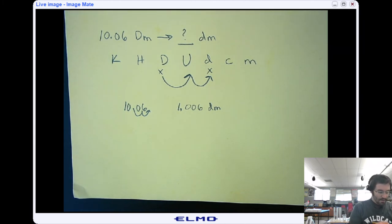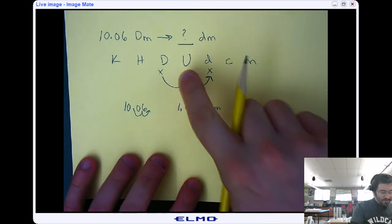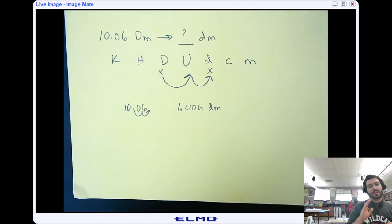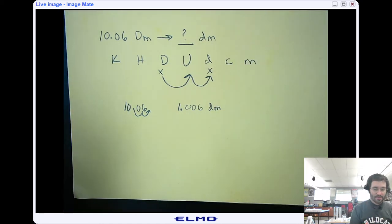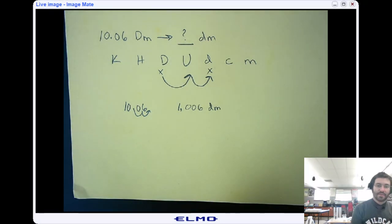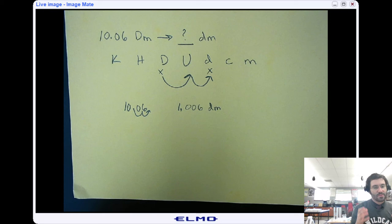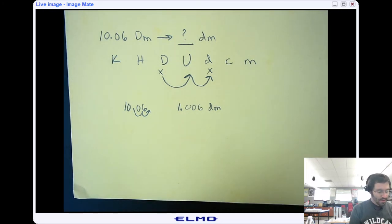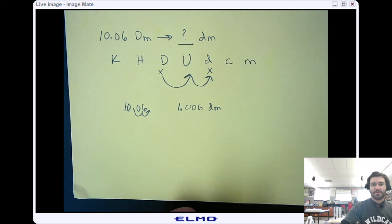Okay, now, quick reminder. So this base unit doesn't have to be meters. It could be grams. It could be liters. It can be several other different units as well. We're mostly sticking with the mass, the length, and the volume at this point. Okay, if you have any more questions, make sure to email me. Ask for help. Hopefully, these two examples were helpful to you guys in figuring out how to convert between metric units.